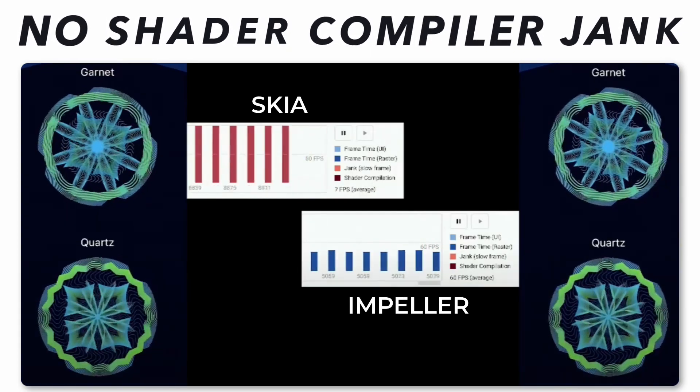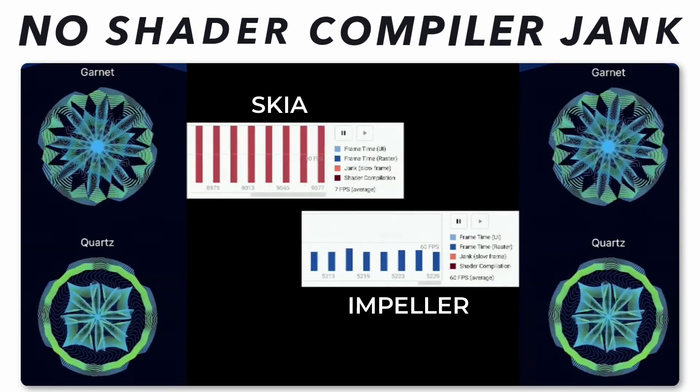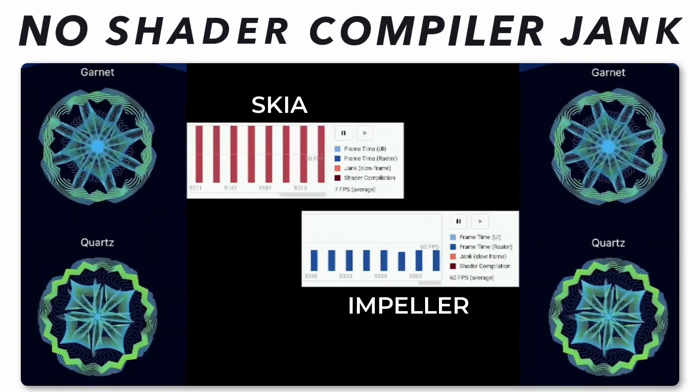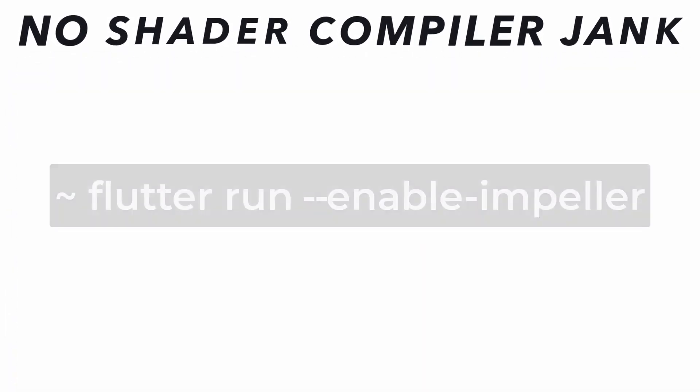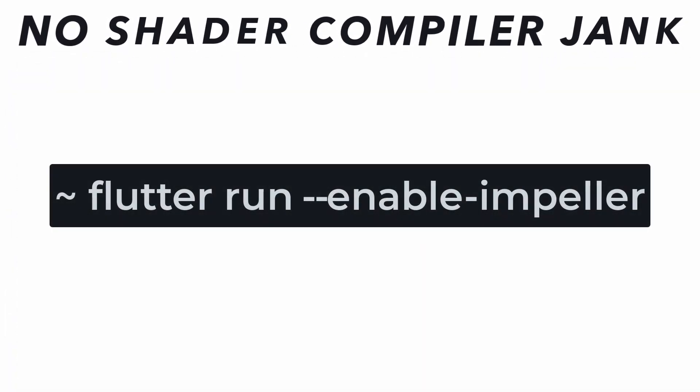You can enable Impeller in iOS apps right now by running the Flutter Run Enable Impeller command. Without this jank, your animations will be much smoother.